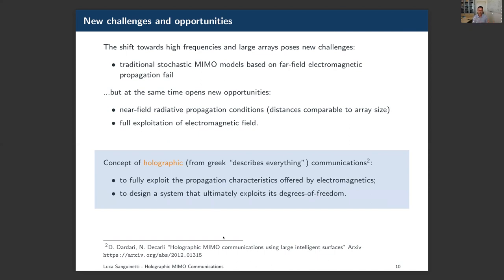The classical stochastic MIMO channel models used in communication theory are no longer good enough to capture the characteristics of the MIMO technology in this regime. This opens many challenges but also many opportunities. We can really exploit the near-field radiative propagation conditions to shape the electromagnetic field — and this is precisely the concept of holographic communications: to fully exploit the propagation conditions offered by electromagnetics in order to design a system that ultimately exploits all the degrees of freedom provided by electromagnetic propagation.